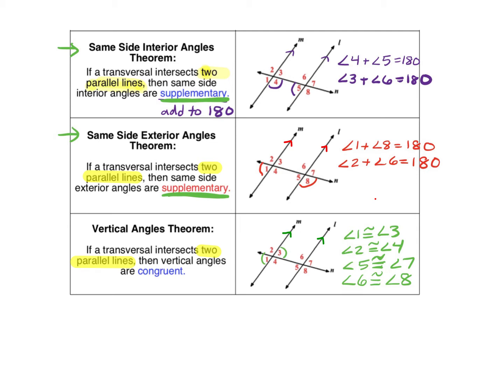The last theorem here should be a review from chapter zero. If a transversal intersects two parallel lines, then vertical angles are congruent. Technically, vertical angles are always congruent, so you really don't even need all three lines. When we look at vertical angles, we just need one line and another line that intersect, and that gives us two pairs of vertical angles.